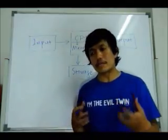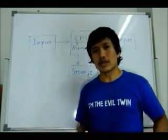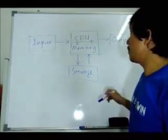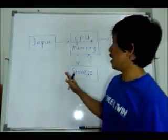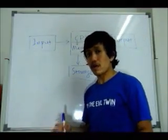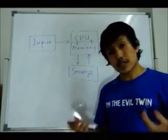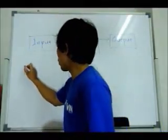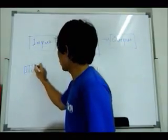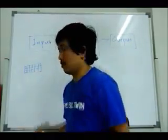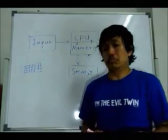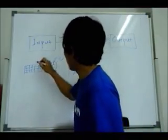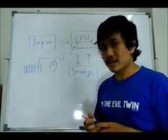The computer is a very simplistic device. Of course, it is advanced — it can do many, many things. But essentially, what it does is it will accept input of some kind using some kind of input device. For example, we have the keyboard and a mouse. These are input devices.